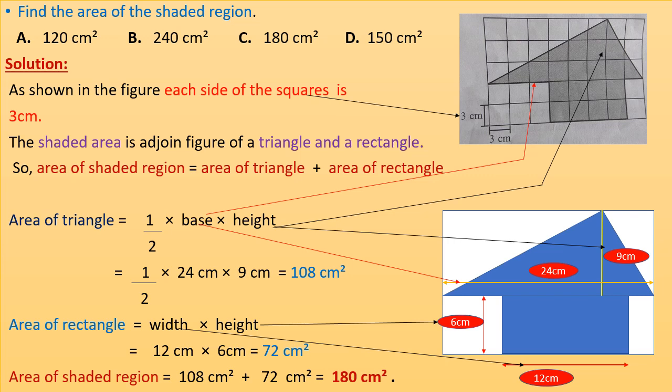Area of triangle equals half into base into height. There are 8 squares along the base of the triangle, each with side 3 centimeters, so base will be 8 into 3 equals 24 centimeters. Similarly, there are 3 squares along the height, each with side 3 centimeters, so height will be 3 into 3 equals 9 centimeters.